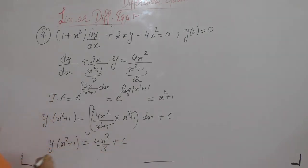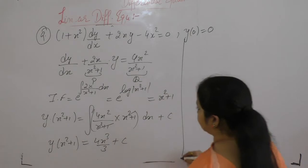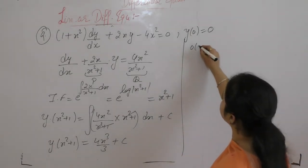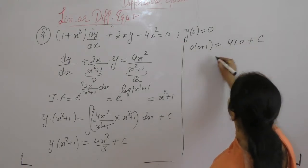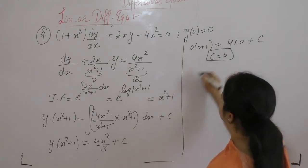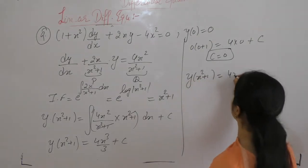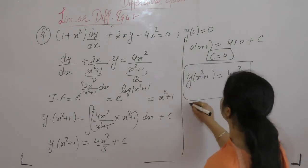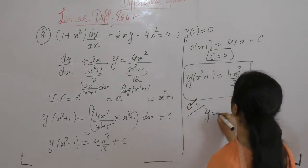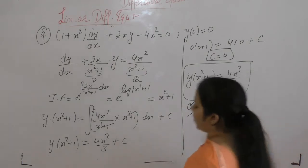y · (x² + 1). Now put the values to find c. When x = 0, y = 0: 0 into something is 0, so we get the value of c as 0. Therefore y · (x² + 1) = 4x³/3, or we can write y = (4/3) · x³/(x² + 1).